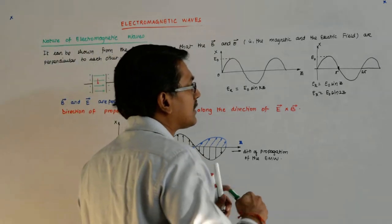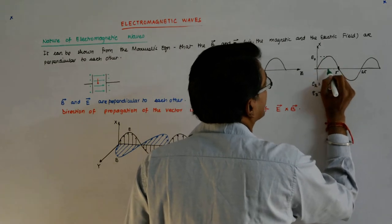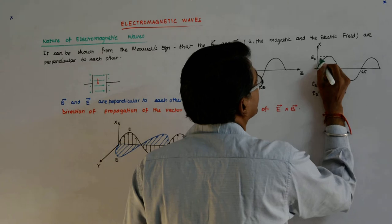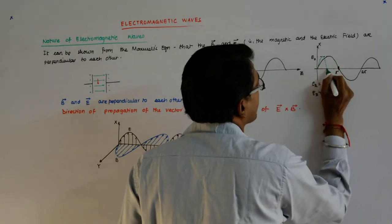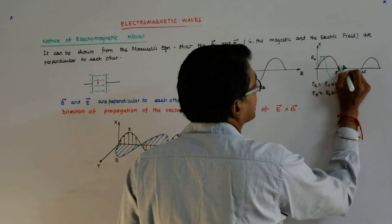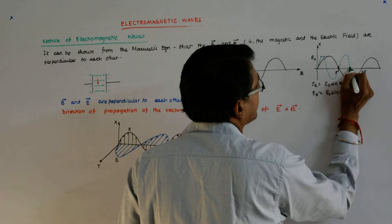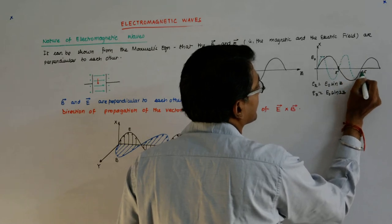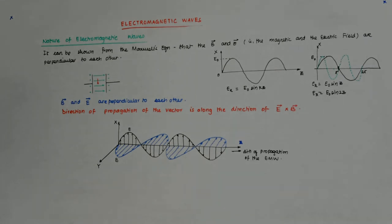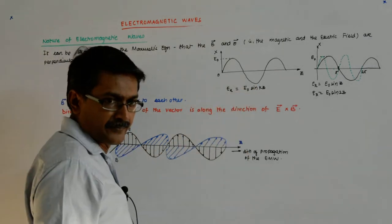For E_x equal to E naught sine(2z), in the same 0 to 2π there will be two cycles — meaning here there will be one, and here there will be half. So it looks compressed. That is why we put in kz.